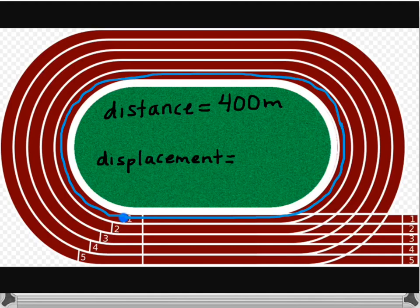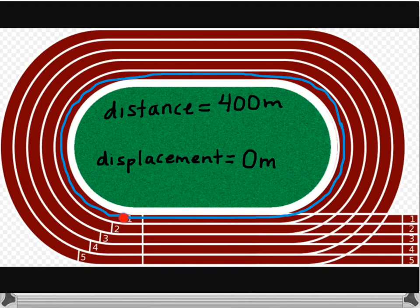Now our displacement is how far we are from our starting position. We started at that blue dot at number one, but we've ended up at the red dot, which is also in the same position at number one. So our displacement is actually zero meters — we haven't moved anywhere from our starting position. Even though we have 400 meters of distance covered, we haven't accomplished motion from our starting to our ending position, so our displacement is zero.